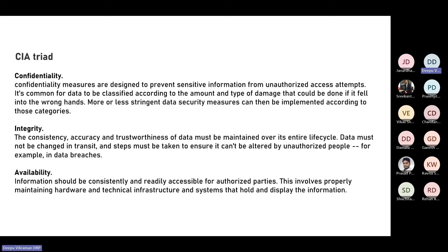The CIA Triad is the pillar of any security implementation. When implementing security, your first focus is confidentiality, integrity, and availability. Confidentiality means that when you use any application and enter your information, you trust that the application will keep it confidential. For example, when you save your credit card details in Amazon, you trust Amazon will keep that safe and not expose it to others. That's the responsibility of any organization — to keep customer information confidential.